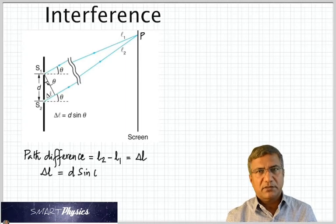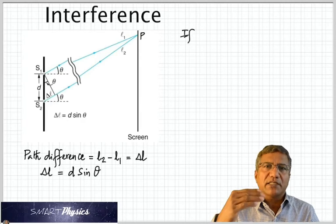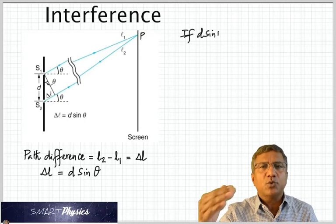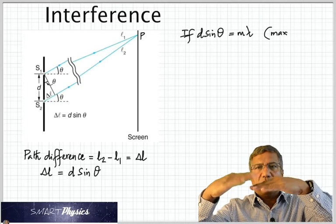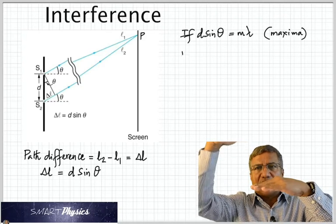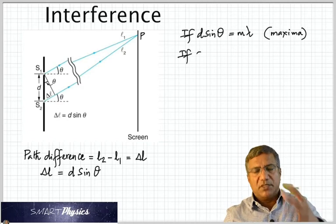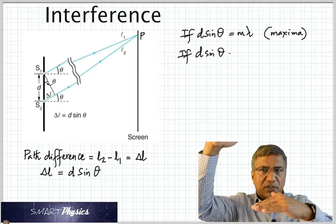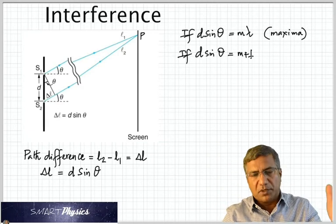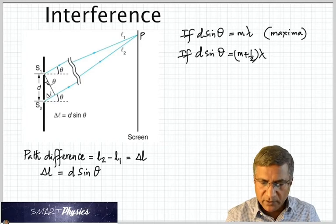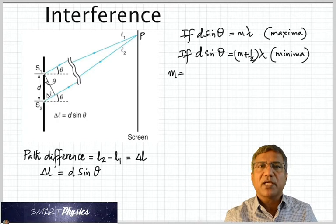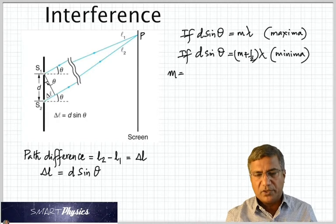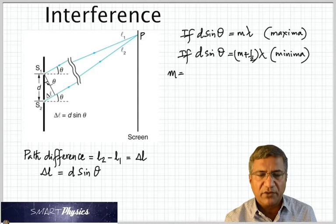Sometimes we say it can take 1, negative 1, 2, negative 2, just to show that if that's the central maxima, on either side you get maximas and minimas. So plus corresponds to the top and the negative to the bottom part of the screen. So when D sin theta is equal to M lambda, you get maxima. But if D sin theta is M plus half lambda, you get minima. How do you explain that?